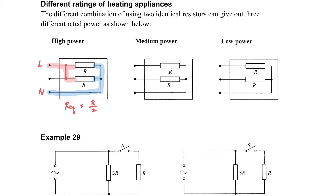If we connect in this way — the line from the neutral, without making them parallel — you can see that the equivalent resistance is R. For the last connection, if we connect the neutral wire so that the current passes through them in series, then the equivalent resistance is equal to 2R.